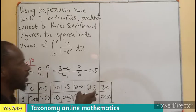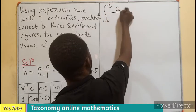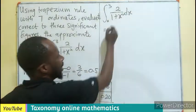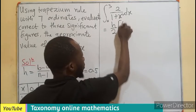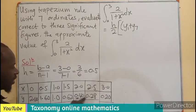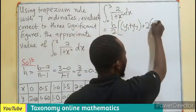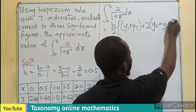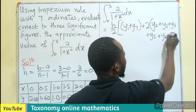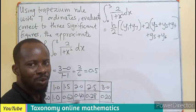So these are the y values. How do we find the approximate value using the trapezium rule? We know that the integral from 0 to 3 of 2 divided by 1 plus x squared dx could be given by h divided by 2 multiplying y1 plus y7, which is the last one, then we add plus 2 of the remaining.